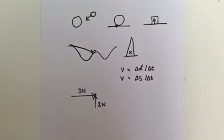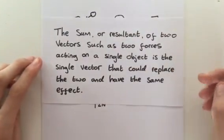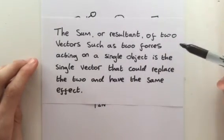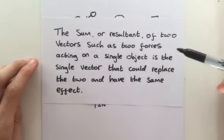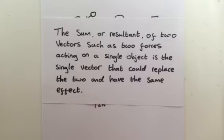So here we come to an important definition that you certainly need to remember. And it basically says the sum or resultant of two vectors, such as two forces acting on a single object, is the single vector that could replace the two and have the same effect.